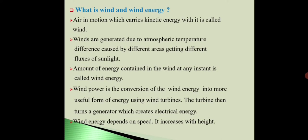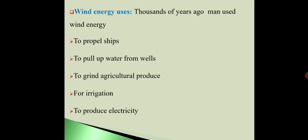Wind energy depends on speed and height. As height increases, wind energy increases. As speed of wind increases, wind energy increases. Thousands of years ago man used this energy to propel ships, to pump out water from wells, to grind agricultural produce like grains. It is also used for irrigation purposes and production of electricity.